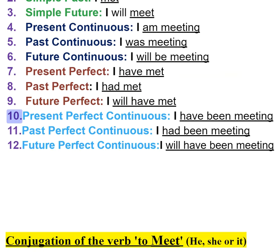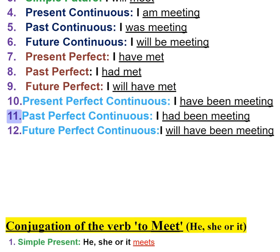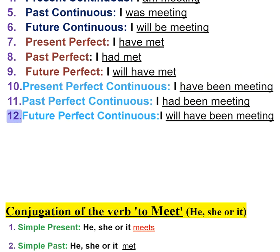10. Present perfect continuous — I have been meeting. 11. Past perfect continuous — I had been meeting. 12. Future perfect continuous — I will have been meeting.